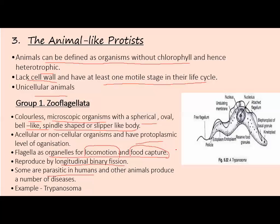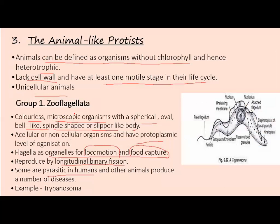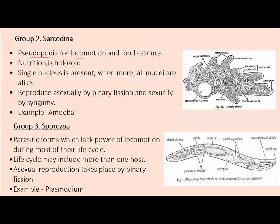The second group is Sarcodina. They use pseudopodia for locomotion and food capture. Nutrition is holozoic and a single nucleus is present. They reproduce asexually by binary fission and sexually by syngamy. A common example is Amoeba.